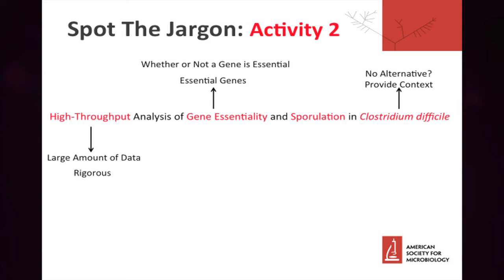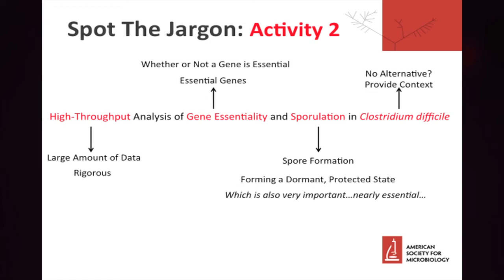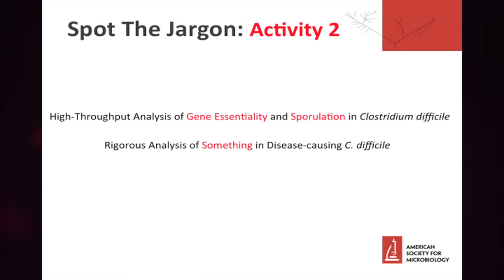Now we're going to have to toy with the wording of our title to make sense, but we'll come back to that in a bit. Finally, we have sporulation — how can we translate this? We can say spore formation, but spore is still a bit of a problem. We can define spore, but now things are getting a little wordy in our title. It's important to keep in mind what is the main point when talking about sporulation — this is something essential for disease transmission. Let's take a step back and look at what we've done so far: Clostridium difficile is now put into context, and high throughput analysis is now translated as rigorous.